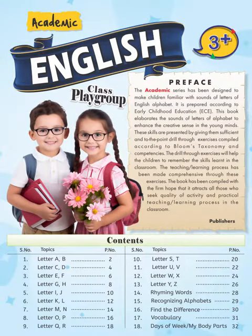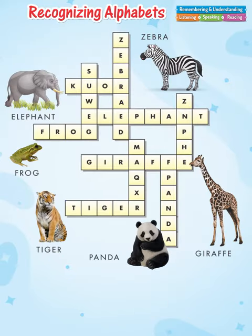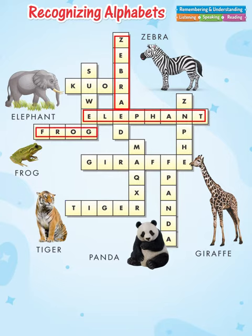Academic English 3 Plus, page 29. Dear children, today we will recognize alphabets that we have read about in this textbook so far. Look at this crossword puzzle — try to find out all the words hidden in it and color the relevant boxes. For example: zebra, elephant, frog, giraffe, tiger.